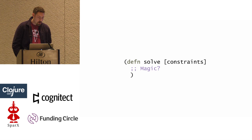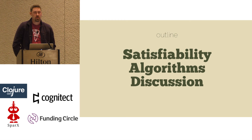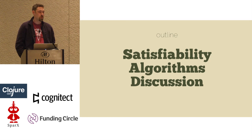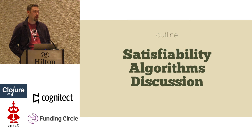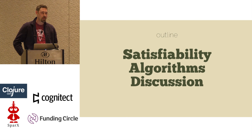But this is not a talk on constraint languages. This is a talk that's going to try and fill in a magic comment on a slide. So here's our outline: we're going to talk about the Boolean satisfiability problem, usually abbreviated SAT. Then we're going to peek under the hood at some of the algorithms involved in SAT solving, do a case study, and then open the junk drawer of rants and random bits I call discussion.